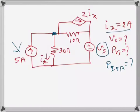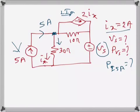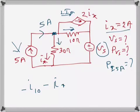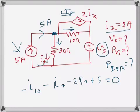At this node, we can see there is a current source so 5 amps is going inwards. Ix is going outwards, and 2Ix is also leaving. Let's label the unknown current in that branch as I10. Writing the sum of currents with entering as positive and leaving as negative: I10 is leaving, Ix is leaving, 2Ix is leaving, and 5 amps is entering, so the sum equals zero.